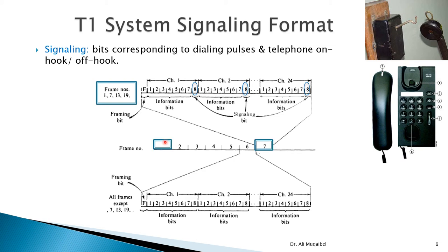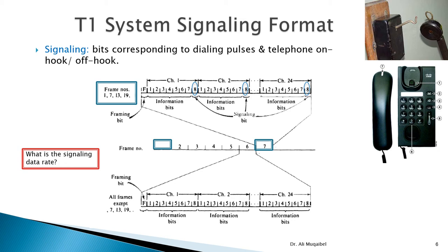Frame numbers 1, 7, 13, 19 have the least significant bit used for signaling; the other frames remain normal. A useful question is: what is the signaling data rate? It would be 1/6 times the framing rate, multiplied by 24 (for all users), divided by 6.